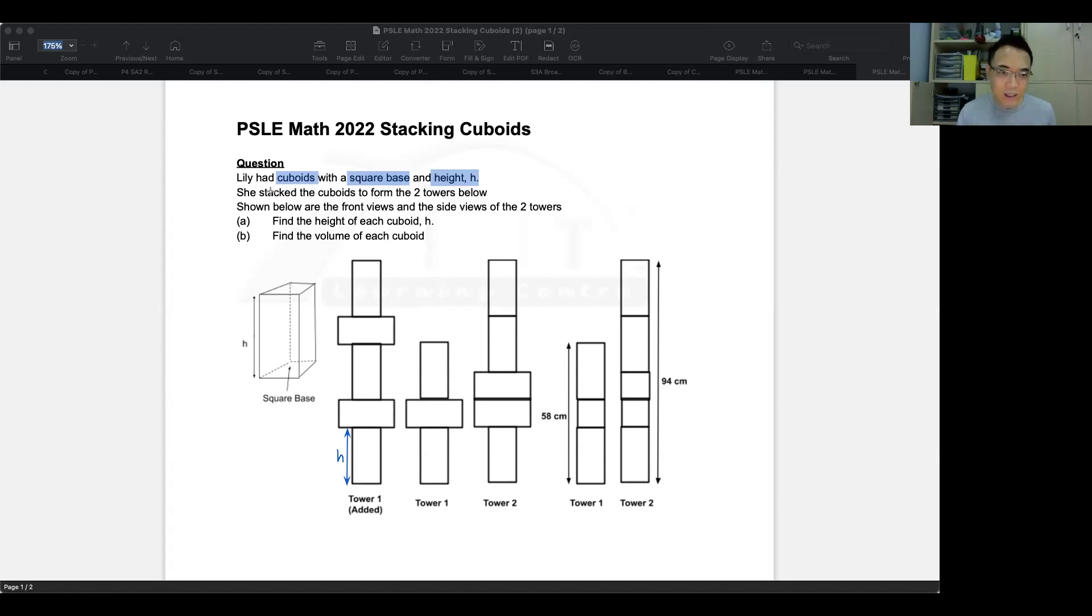It says she stacked the cuboids to form the two towers below. So there are only two towers even though you see five. This is tower one and two. This is also tower one and two from a different point of view and this is the one that I added. It says that shown below are the front views and the side views of the two towers. So the front view is the one that you see from here and the side view is the one that you see here.